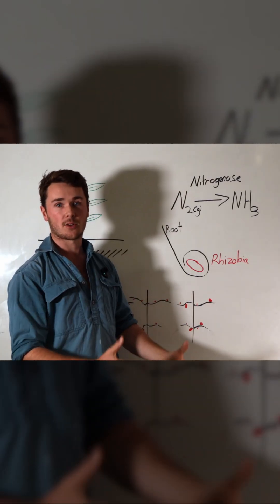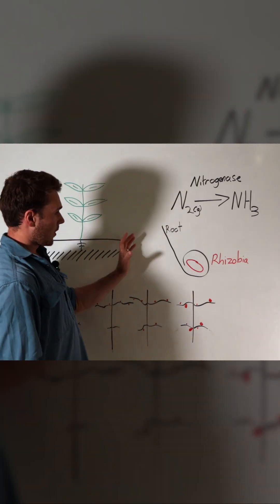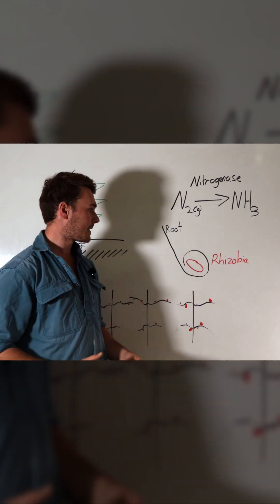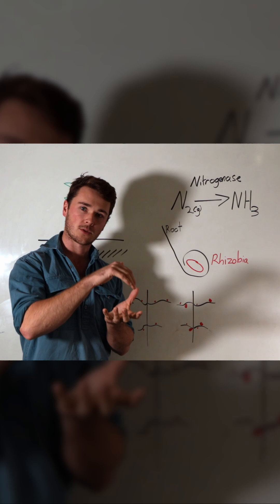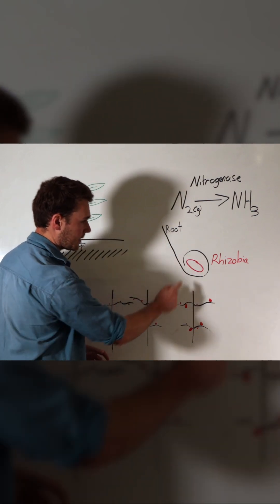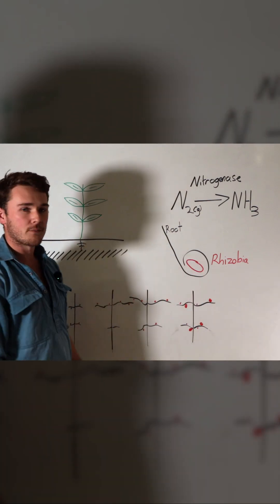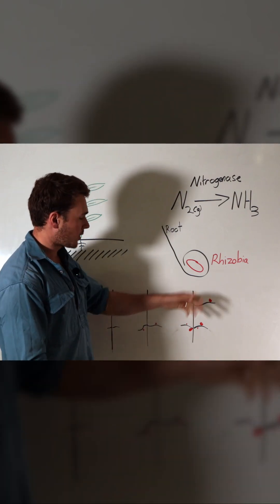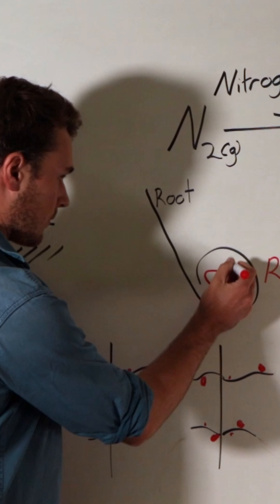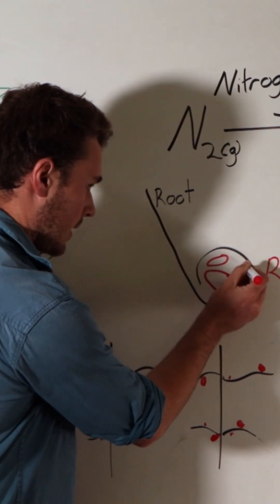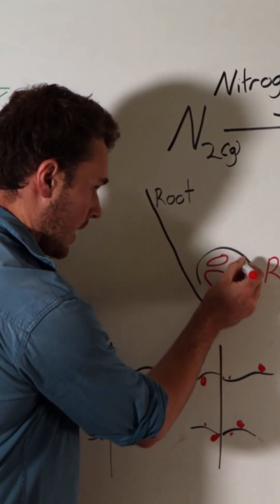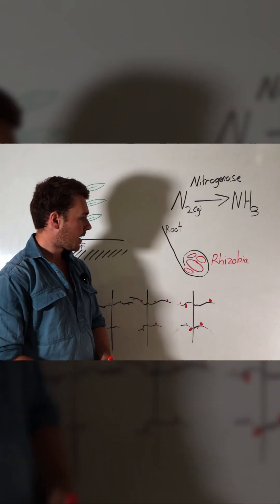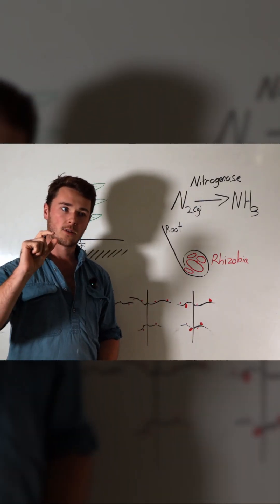So we're able to actually tap into that nitrogen with this process. The legume puts the root down and it finds a rhizobia bacteria, and the root curls around that bacteria like this, and starts the formation of a nodule. The rhizobia bacteria will then repopulate, increasing in numbers, and fills that nodule up with other rhizobia bacteria. And that's when we get our nice nodule.